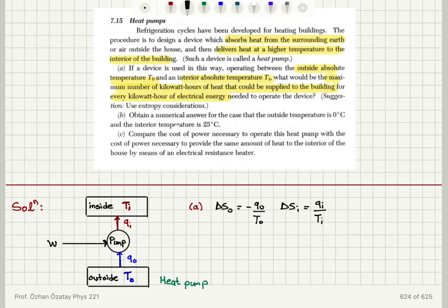The total entropy change delta S star, which is minus Q out over T out plus Q in over T in, must be greater or equal to zero. This is the second law of thermodynamics. The delta S of the pump is zero because it is cyclic, so only the heat reservoirs provide entropy changes.